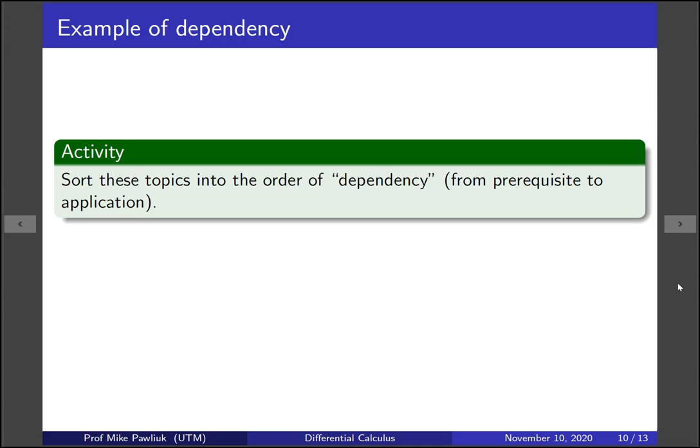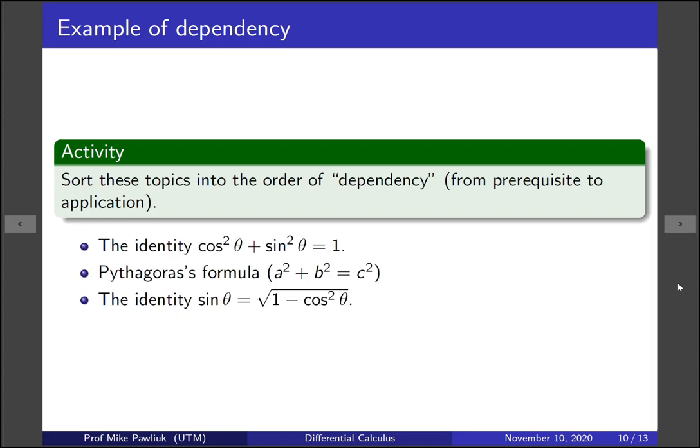Here's an activity for you. Sort these topics into the order of dependency from prerequisite to application. So the identity cos squared theta plus sine squared theta equals 1. Pythagoras' formula that a squared plus b squared equals c squared. And the identity sine theta equals square root of 1 minus cos squared theta. Can you order these in terms of prerequisites and applications? Which would be the first thing you taught, then the second, then the third? Take a moment to sort these out.